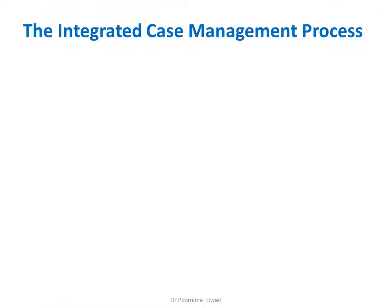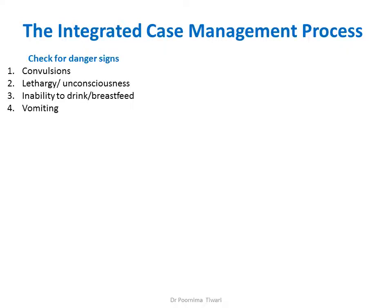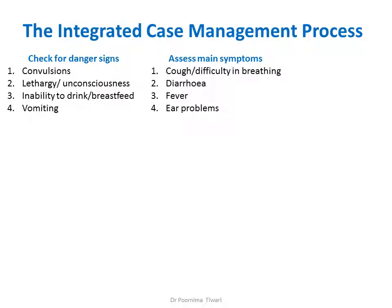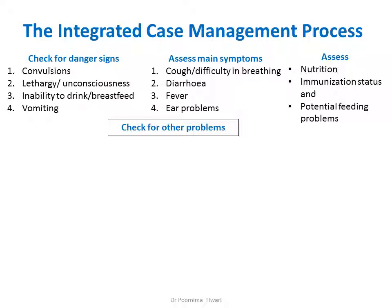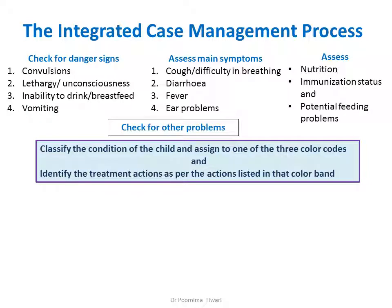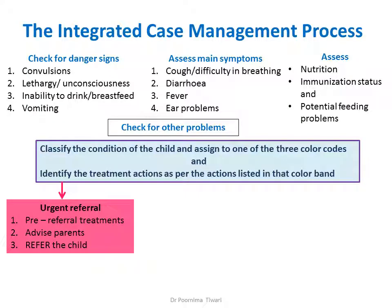The integrated case management process works as follows: First, check for danger signs as soon as the child presents — and refer if any are present. Then assess the main symptom the child has presented with, take a detailed history, assess nutritional status, immunization status, feeding patterns, and any other problems. Based on this information, classify the child's condition and assign it to one of three color codes, then identify the treatment action. If the child falls in the pink category, it requires urgent referral with any pre-referral treatment and advice to the parents for what to do on the way.